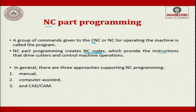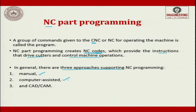Movement of the cutter and machine execution: one way is to allow a simulation on a computer where the cutter moves on top of a part with no actual machining. But finally what we want is to machine a part, so we have to control the machines. Both things — cutter movement and machine control — are controlled by NC codes. In general there are three approaches supporting NC programming: manual, computer assisted, and CAD CAM environment.